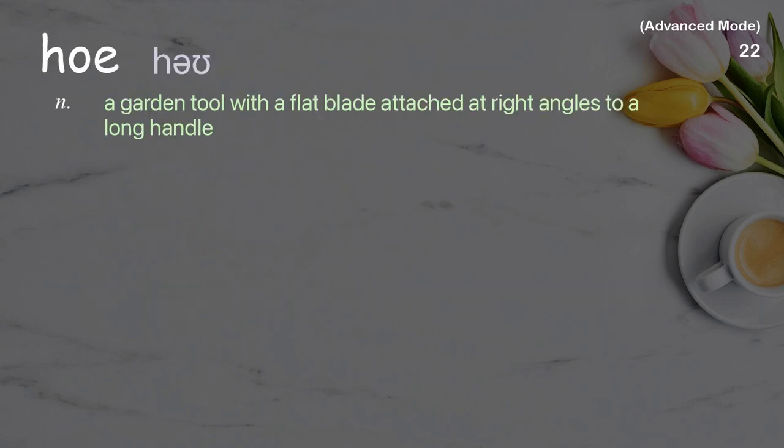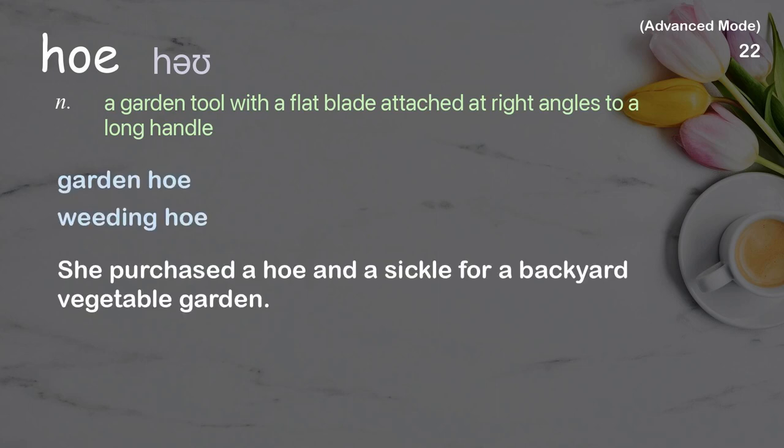Hoe: a garden tool with a flat blade attached at right angles to a long handle. Examples: garden hoe, weeding hoe. She purchased a hoe and a sickle for a backyard vegetable garden.